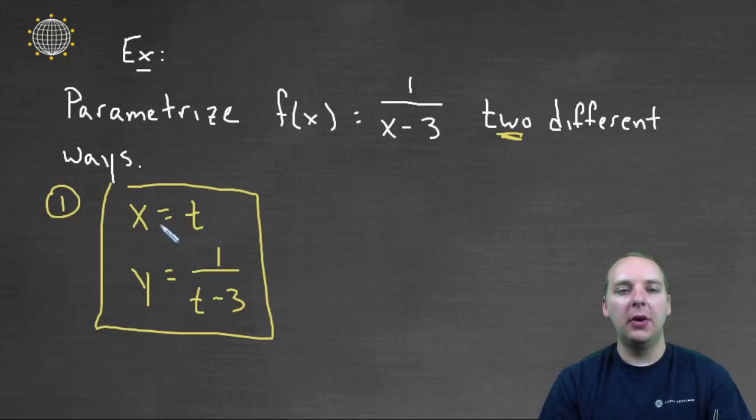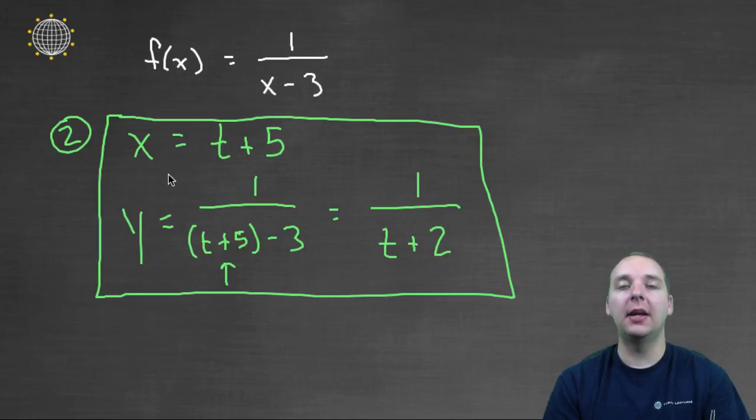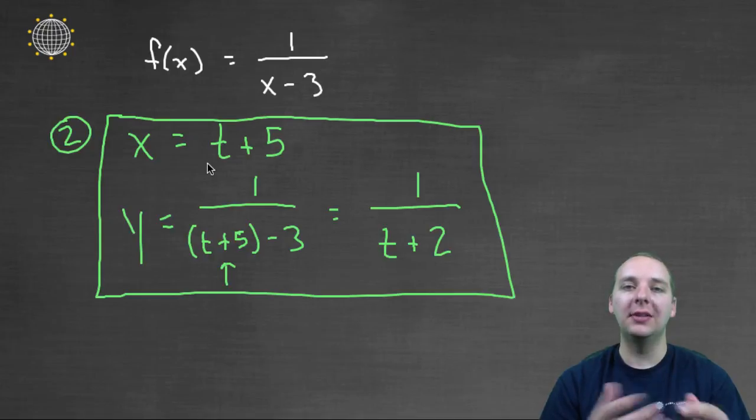For example, if t was 10, then the x would be at coordinate 10 for the first parametrization, but it would be at 15 for the second parametrization. So you might be at different locations along the curve, but it is still sketching out the same curve.